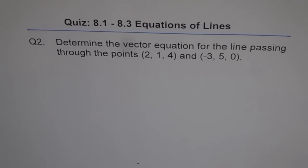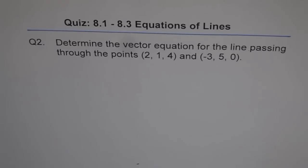Question 2. Determine the vector equation for the line passing through the points (2, 1, 4) and (-3, 5, 0).